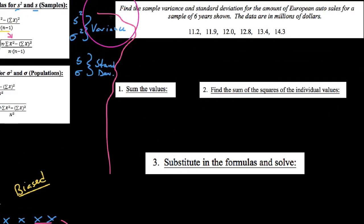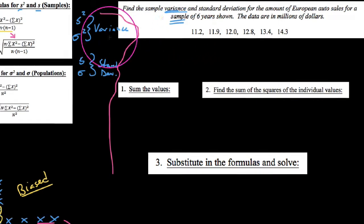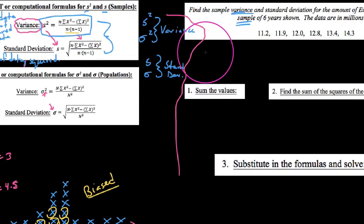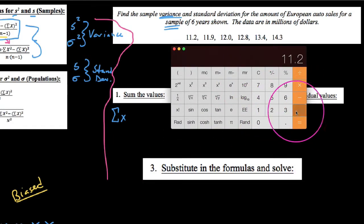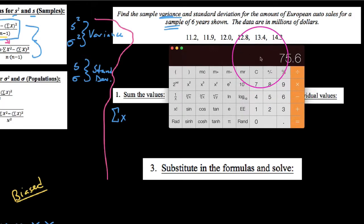Let's go ahead and work our example: find the sample variance and standard deviation for the amount of European auto sales for a sample of six years, in millions of dollars. Since we're talking about a sample, we'll use the first set of formulas. Always make a grocery list of the three things you need. First: the sum of our data — just add them all up: 11.2 plus 12 plus 11.9 plus 12.8 plus 13.4 plus 14.3 equals 75.6.